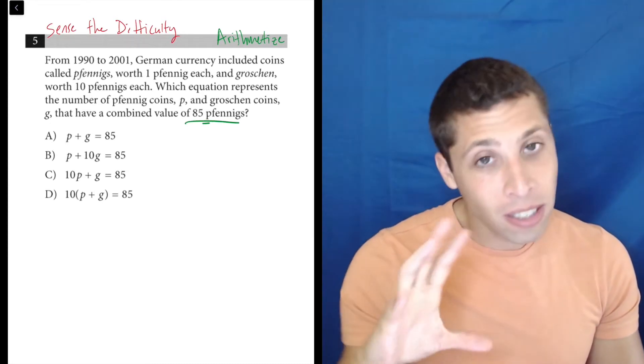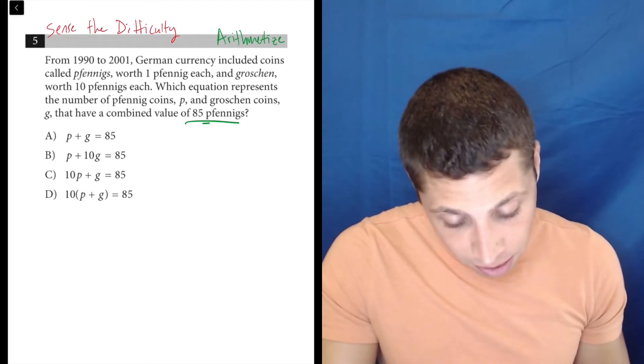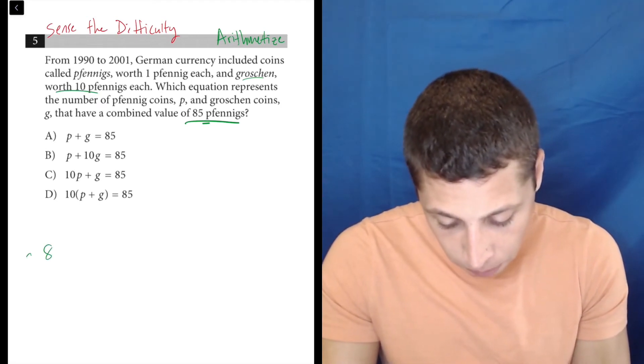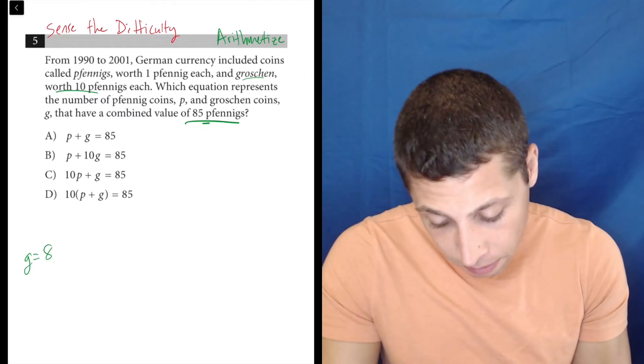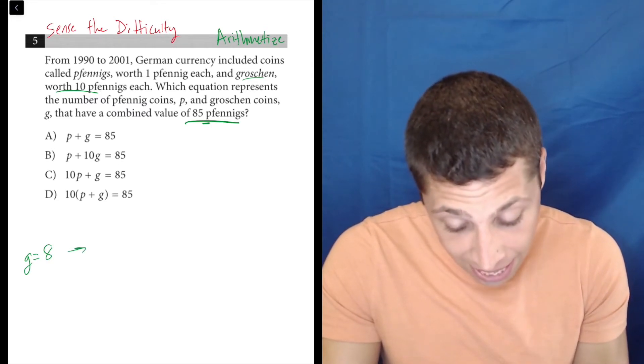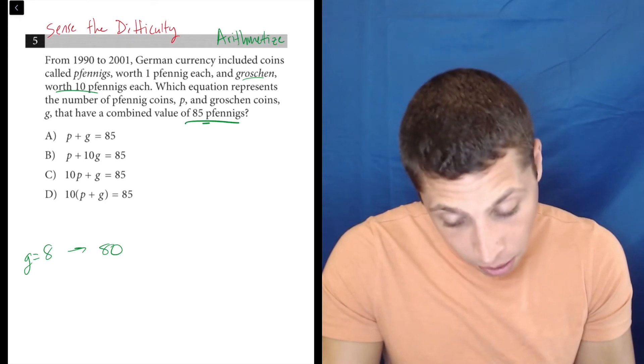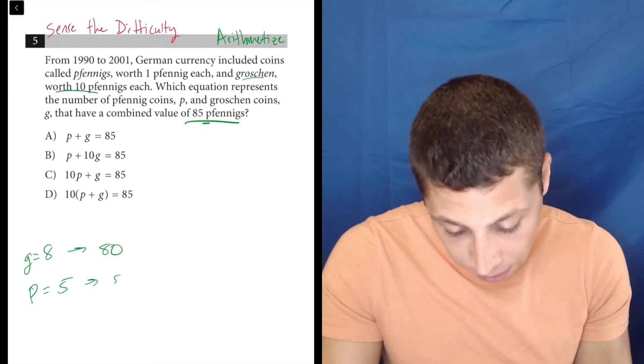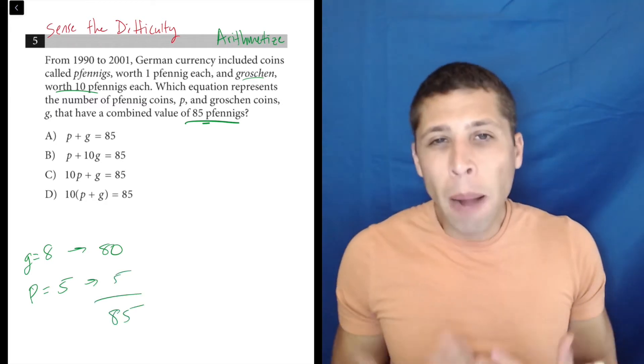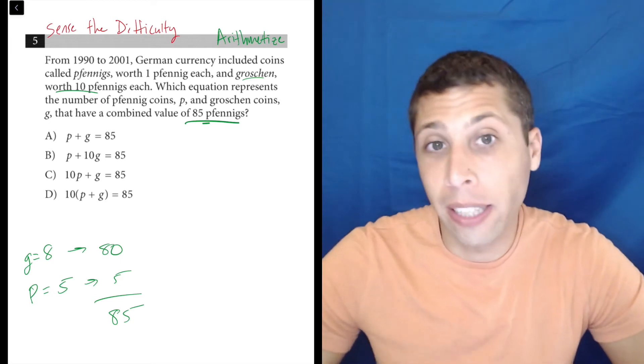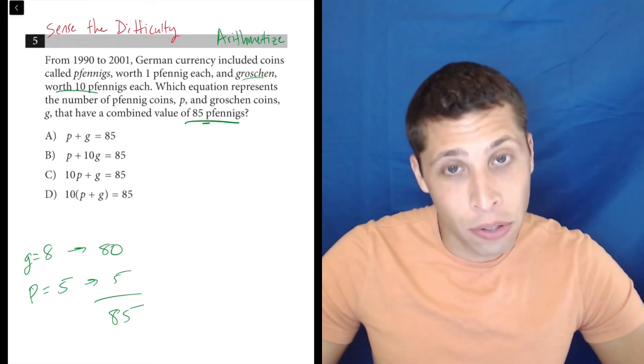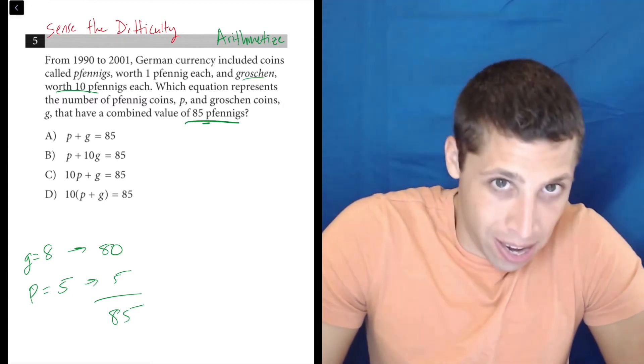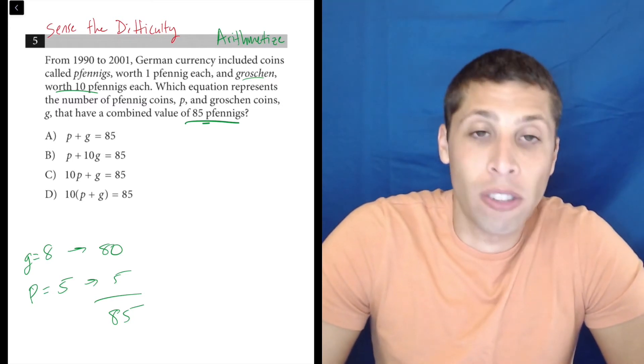So I'm going to just pick a simple scenario here. We need 85 Fennings. So if each Groshen is worth 10, how about we just say there's 8 Groshens and then that would be 80 Fennings total. And then another 5, letter P, would be another 5 so that would get us the 85. I don't know if that's what I have, but I'm just thinking of it in a very simple way for the sake of having some numbers.